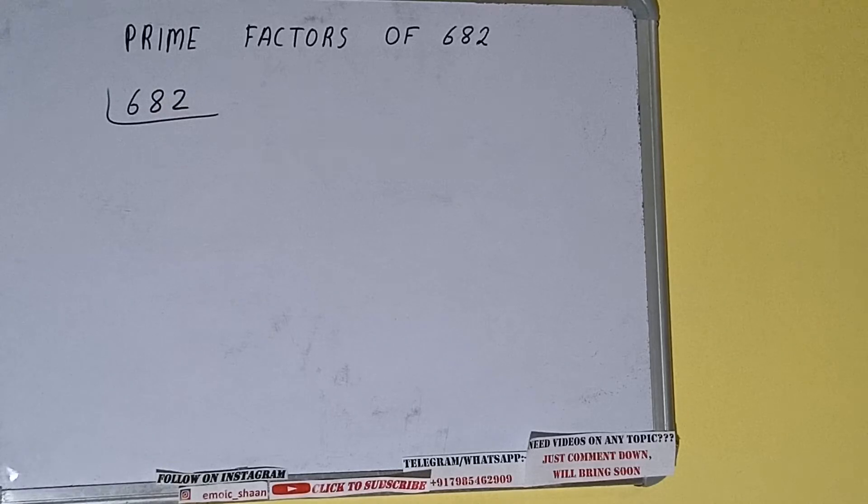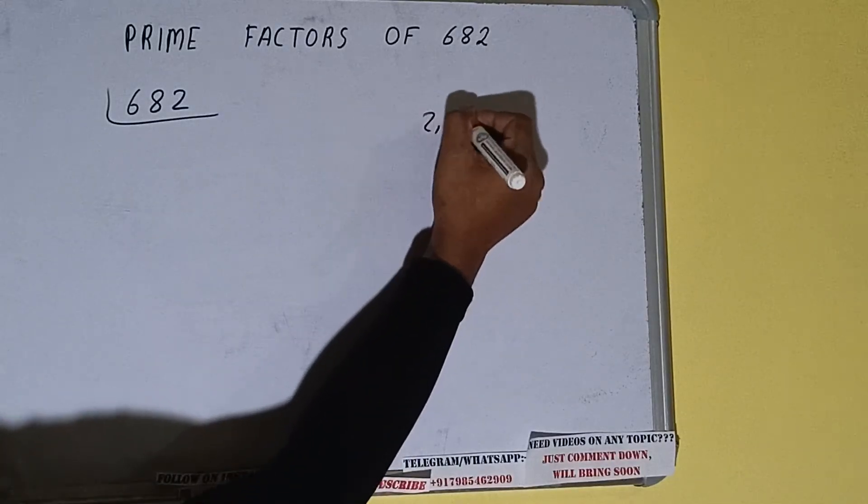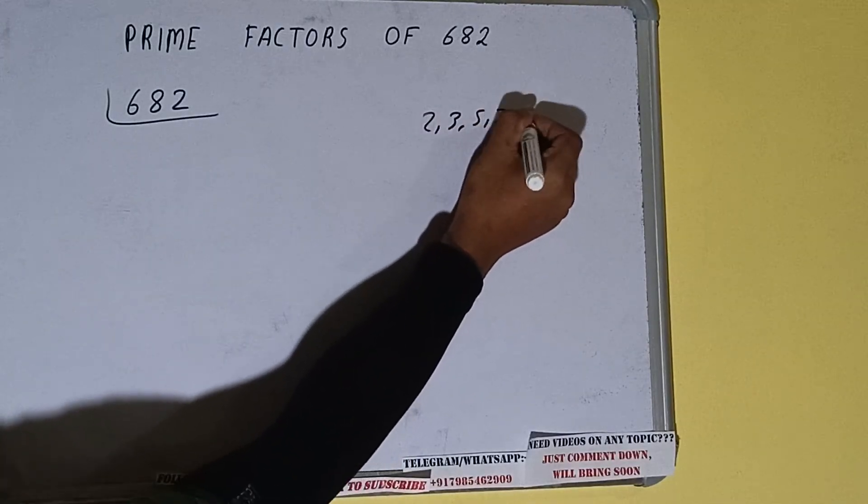The next thing we need to know about is what are prime numbers. So prime numbers are numbers that are divisible by 1 and the number itself, like 2, 3, 5, 7, and so on.